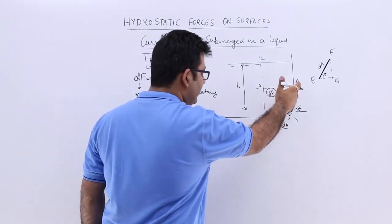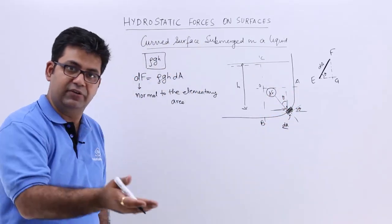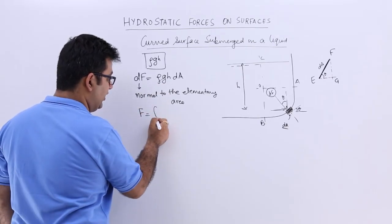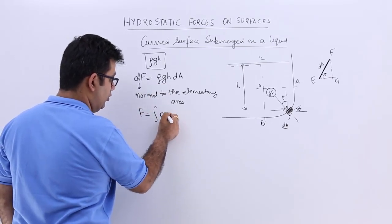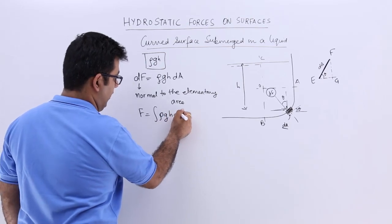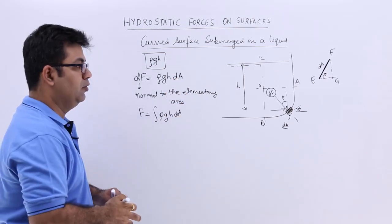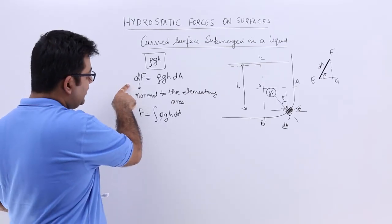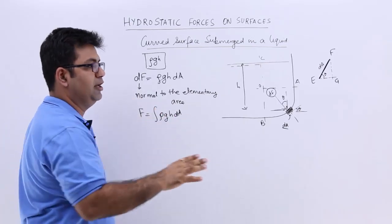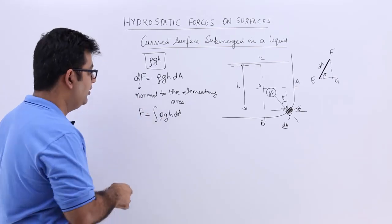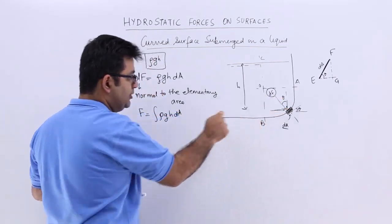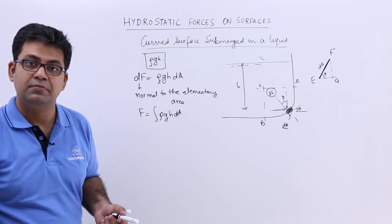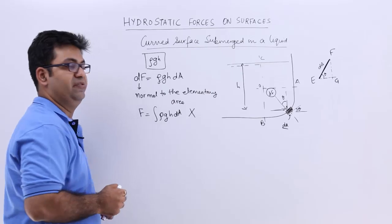To find the force for the entire curved surface, we would integrate: integral of rho g h dA. Now there is a very important concept here. This pressure force is always normal to the area, so when you talk about the entire surface, the direction of this force keeps changing — and therefore you cannot integrate over a curved surface.